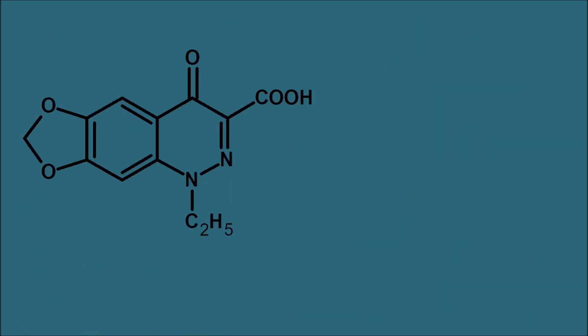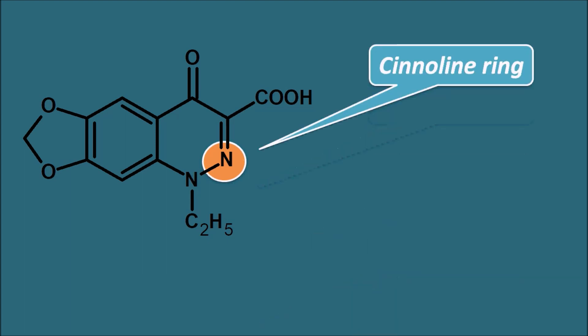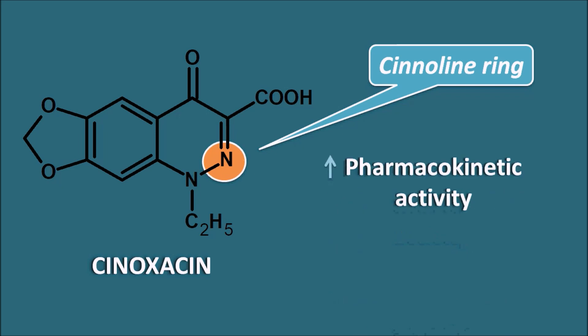For the cinnoline ring system, where the second carbon is replaced by nitrogen, the example drug is cinoxacin. This cinnoline ring increases the pharmacokinetic activity of the drug. However, cinoxacin is less active compared to its quinoline analogues. So cinoxacin was available in the market for a few years but was later discontinued because of its lesser activity.